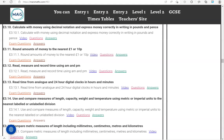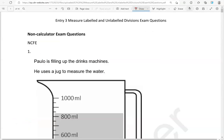In this video, we'll go through exam questions that cover the criteria: use and compare measures of length, capacity, weight, and temperature using metric or imperial units to the nearest labeled or unlabeled division. You can locate the questions on the MassMath.com website under entry 3. The questions come from different exam boards. We'll start with the non-calculated questions and then move to the calculated questions.